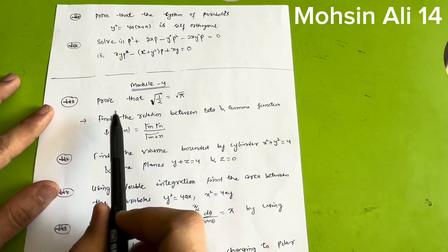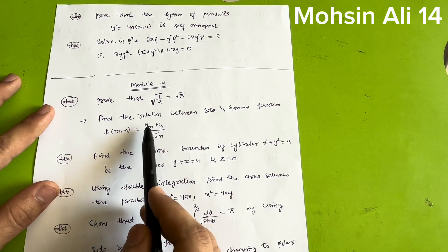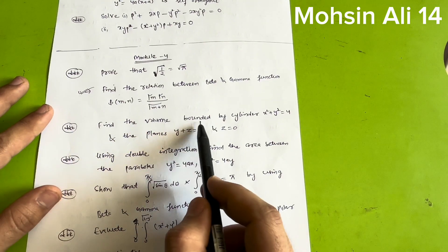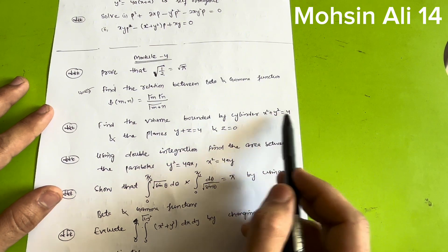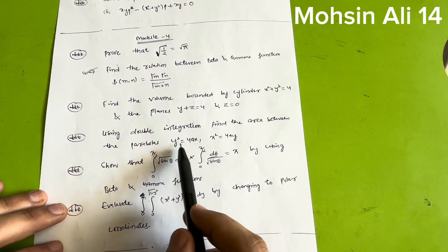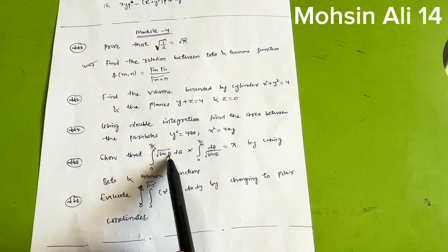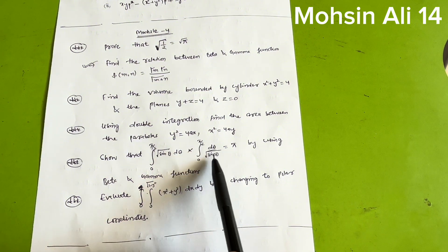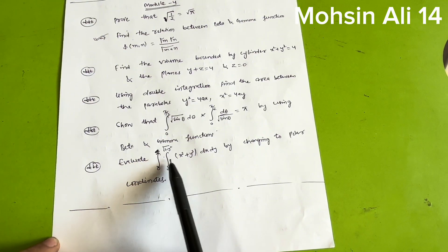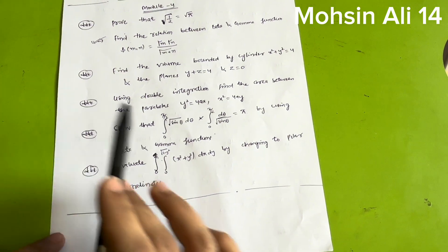For Module four, super important questions include: prove that Γ(1/2) = √π; find the relation between Beta and Gamma functions: β(m,n) = Γ(m)·Γ(n) / Γ(m+n); find the volume bounded by cylinder x² + y² = 4 and the planes y + z = 4 and z = 0 using double integration; find the area between parabolas y² = 4ax and x² = 4ay; show that ∫₀^(π/2) √sinθ·dθ × ∫₀^(π/2) dθ/√sinθ = π using Beta-Gamma functions; and evaluate ∫∫ (x²+y²)dxdy by changing to polar coordinates.